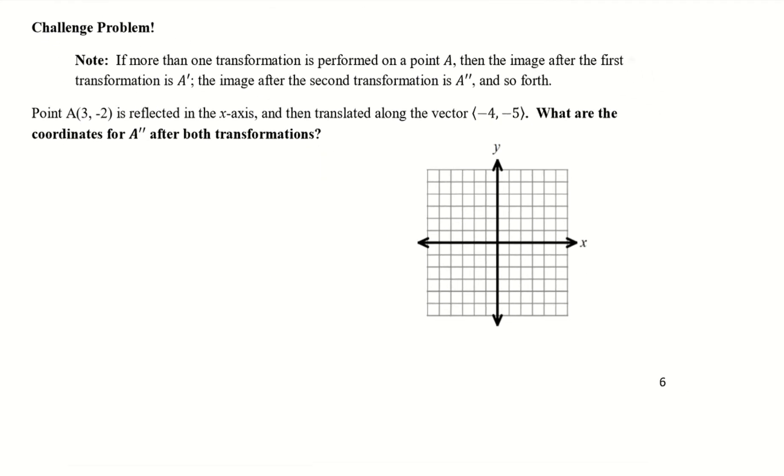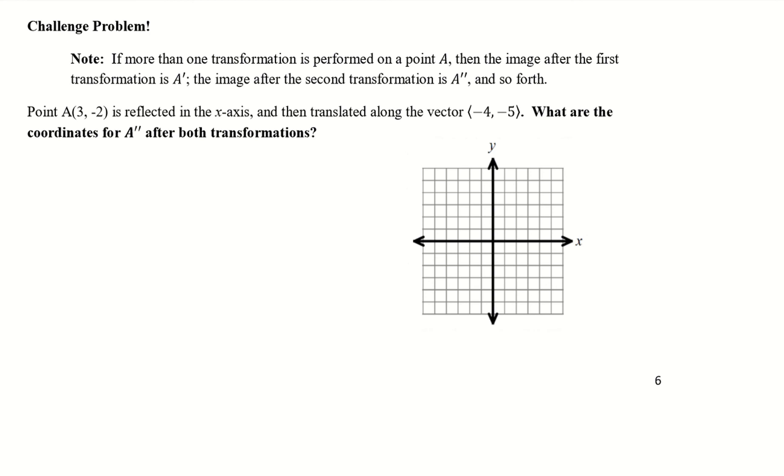Alright. And challenge problem. So for those of you who want to try this challenge problem without you seeing it, I'm going to give it a couple seconds. You can pause the video before you see it. And then I'll go through it. Alright. So the note, if more than one transformation is performed on point A, then the image after the first transformation is A prime. The image after the second transformation is A double prime and so forth. So if there was three transformations, it'd be A triple prime with three apostrophes up top. Alright. So point A is 3, negative 2 is reflected on the x-axis and then translated along the vector negative 4, negative 5. What are the coordinates for A double prime after both transformations?